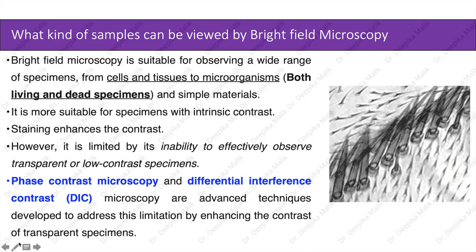Bright field microscopy is suitable for observing a wide range of specimens — from cells and tissues to microorganisms, both living and dead, and simple materials. It is more suitable for specimens with intrinsic contrast; staining enhances contrast. However, it is limited by its inability to effectively observe transparent or low-contrast specimens. Phase contrast microscopy and differential interference contrast microscopy are advanced techniques developed to address this limitation by enhancing the contrast of transparent specimens.